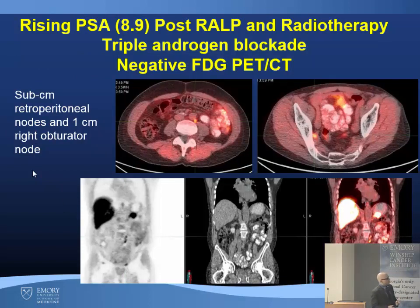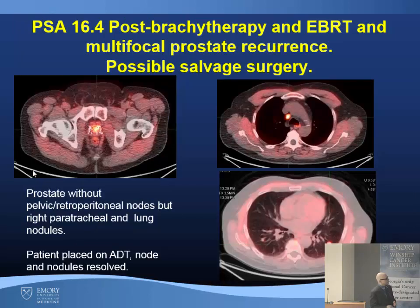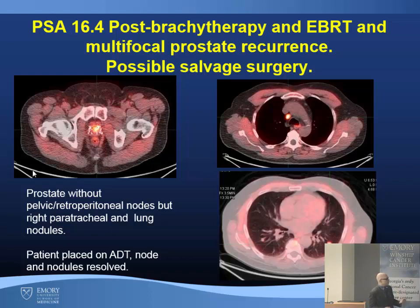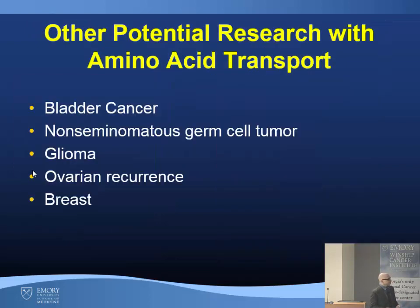Two Axumin cases: the first had rising PSA post-radical prostatectomy, radiotherapy, and triple androgen blockade with a negative FDG PET-CT — we picked up retroperitoneal nodes and a subcentimeter right obturator node. The second had a PSA of 16.4 post-brachytherapy and radiotherapy, with multifocal prostate recurrence. The surgeon and patient were considering salvage surgery. With fluciclovine, we saw uptake in the prostate, no pelvic or retroperitoneal nodes, but did pick up right paratracheal nodes and lung nodules that lit up. These weren't biopsied, but the patient was placed on ADT and the nodes and nodules resolved.